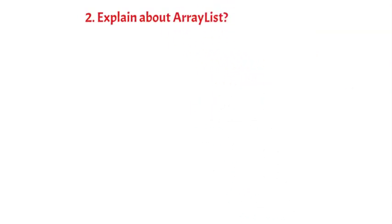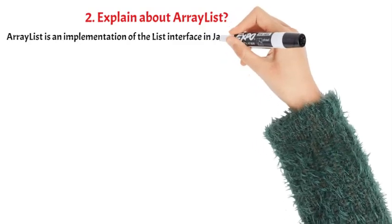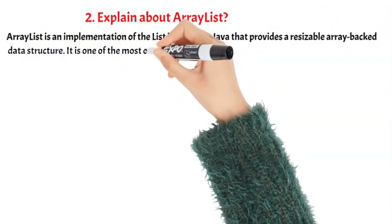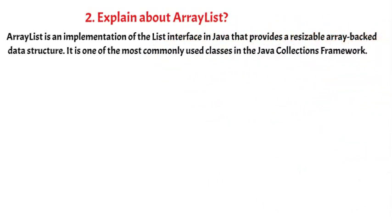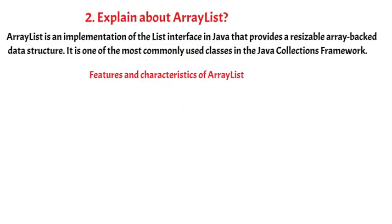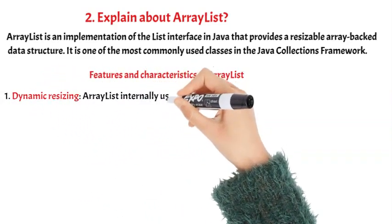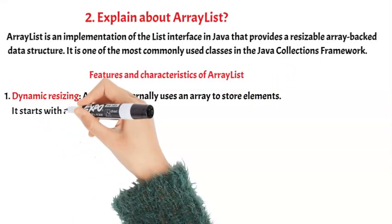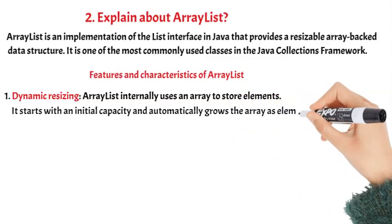ArrayList is an implementation of the List interface in Java that provides a resizable array-backed data structure. It is one of the most commonly used classes in the Java Collections Framework. Key feature 1: Dynamic Resizing — ArrayList internally uses an array to store elements. It starts with an initial capacity and automatically grows the array as elements are added.